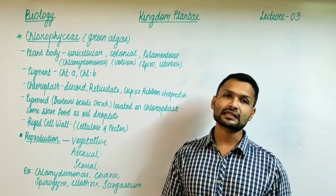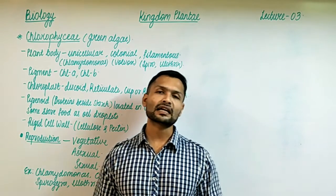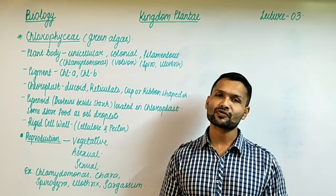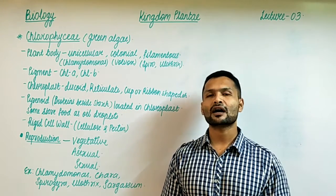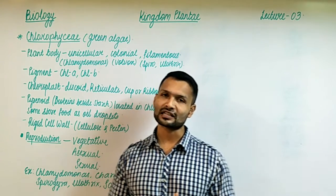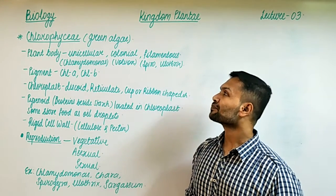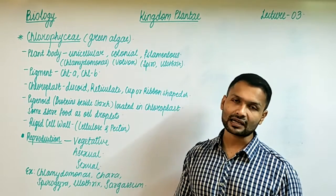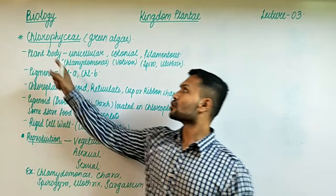Chlorophyceae stands for green algae, Phaeophyceae stands for brown algae, and Rhodophyceae stands for red algae. So today our topic of discussion is Chlorophyceae, also known as green algae as the name itself suggests.